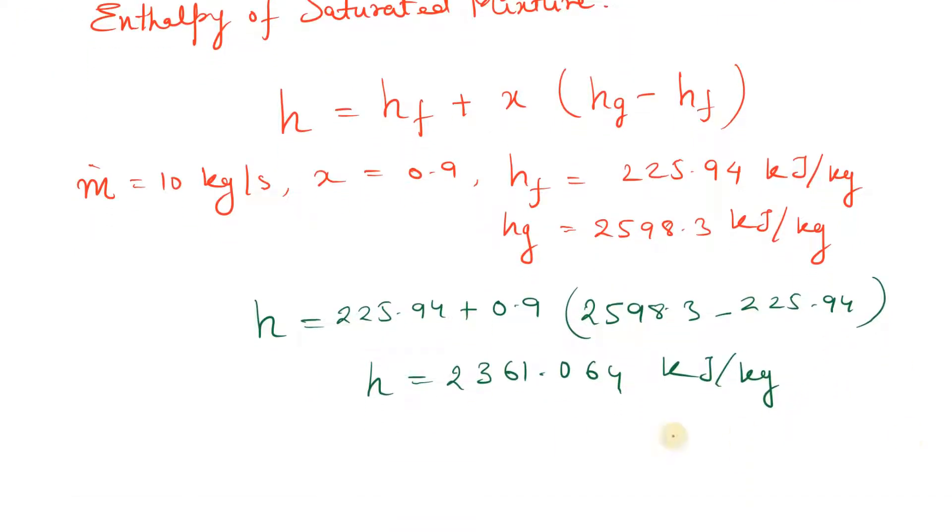Our main aim is to find the power output. Power output is given by P equals mass flow rate times change in enthalpy, so H1 minus H2.